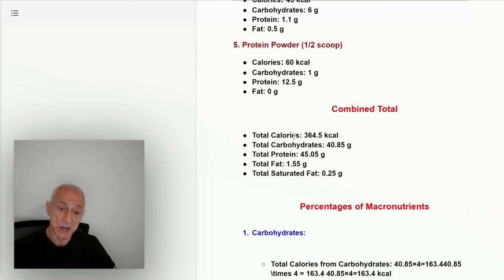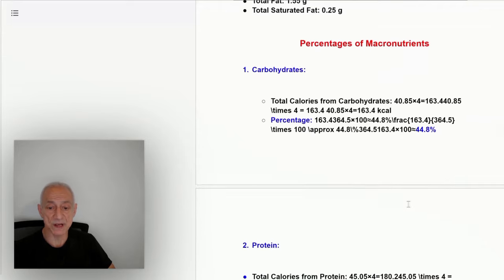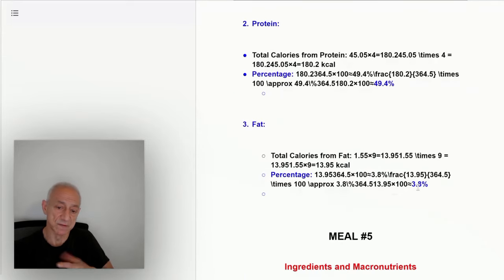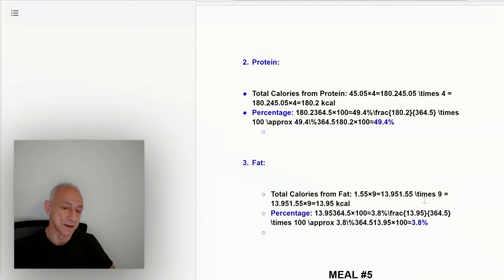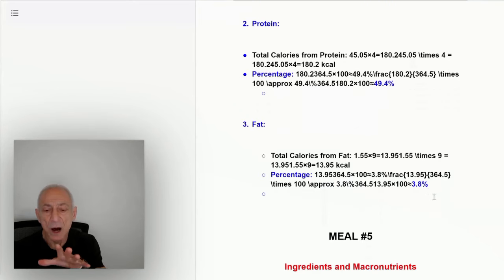Combined total of this meal is about 365 calories, 40 to 41 grams of carbs, 45 grams of protein. Fat is nonexistent. The percentage of micronutrients: carbohydrates 45%, protein 50% give or take, and fat is basically nonexistent at 4%. Again, remember what I said earlier—percentage point either way. So this is approximate.